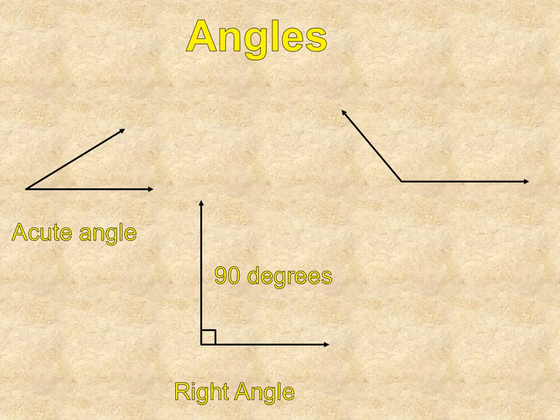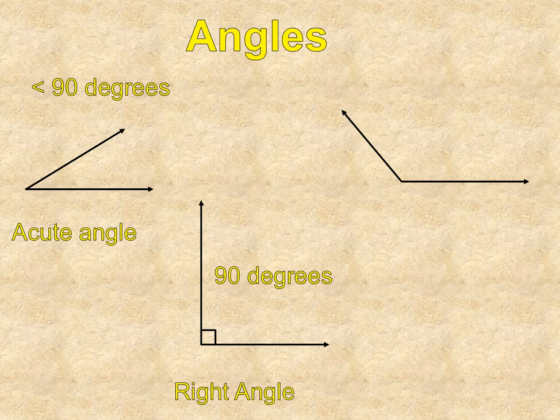So on the left, you see this little angle. It's so cute, so tiny. This is called an acute angle. And it is an angle that is less than 90 degrees. So anything from one degree up to 89 degrees, right in that area.